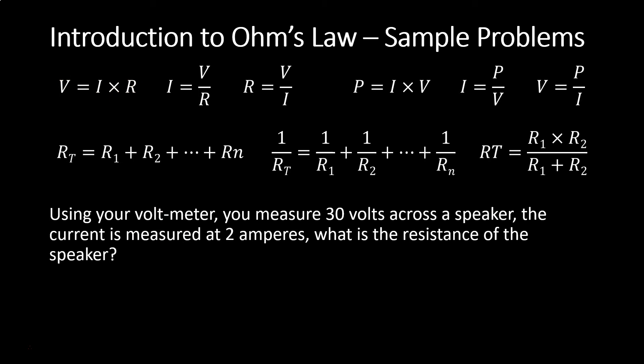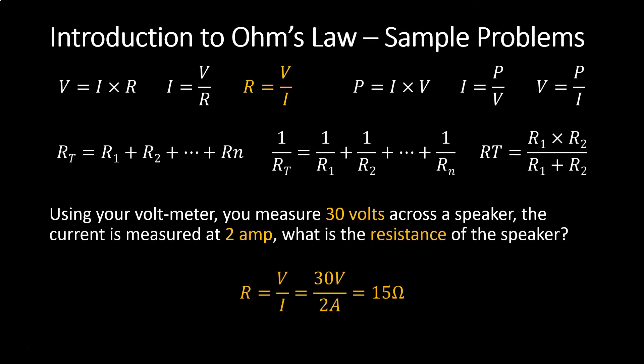Using your voltmeter, you measure 30 volts across a speaker. The current is measured at 2 amps. What is the resistance of the speaker? You are given voltage and current and need to solve for resistance. Resistance equals voltage divided by current, so 30 volts divided by 2 amps equals 15 ohms.